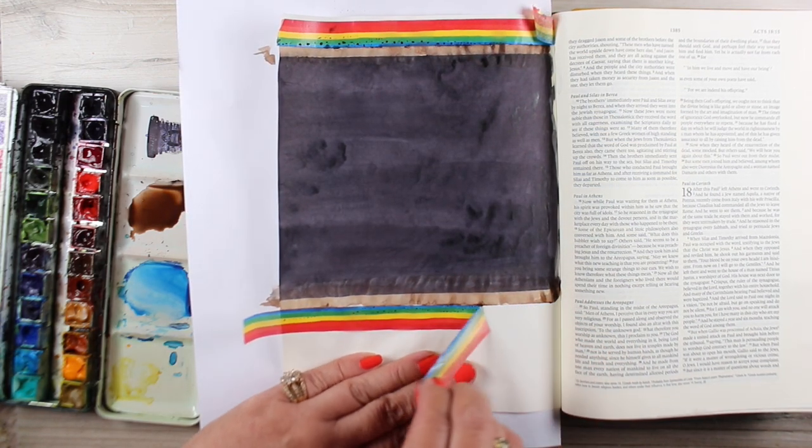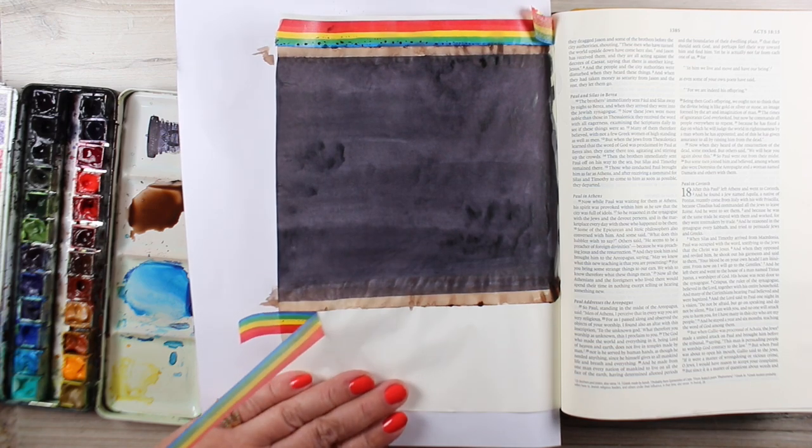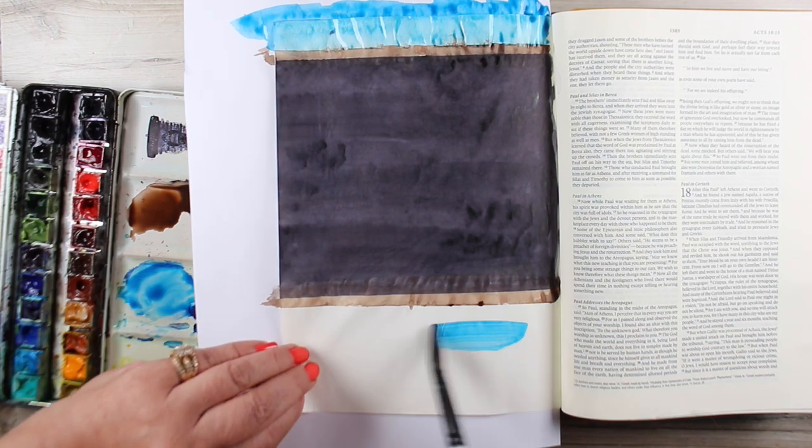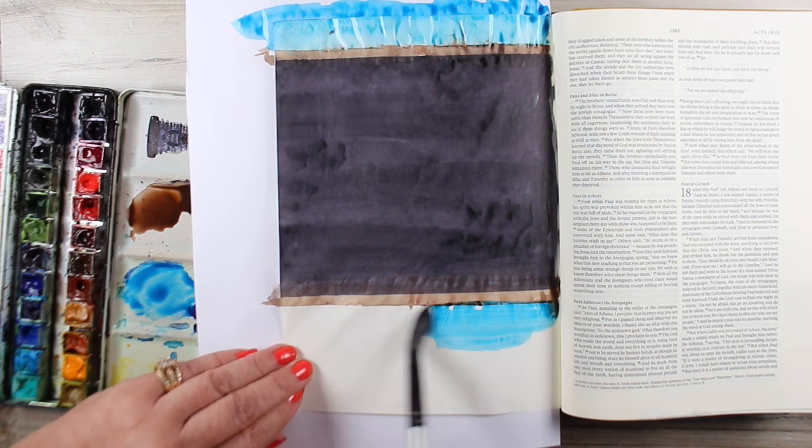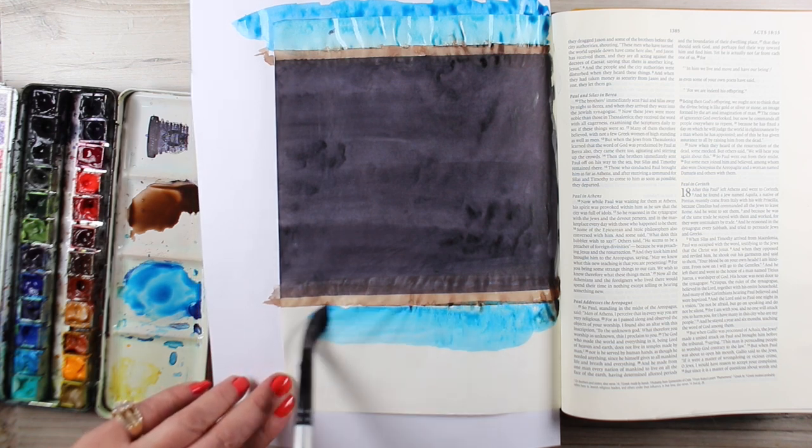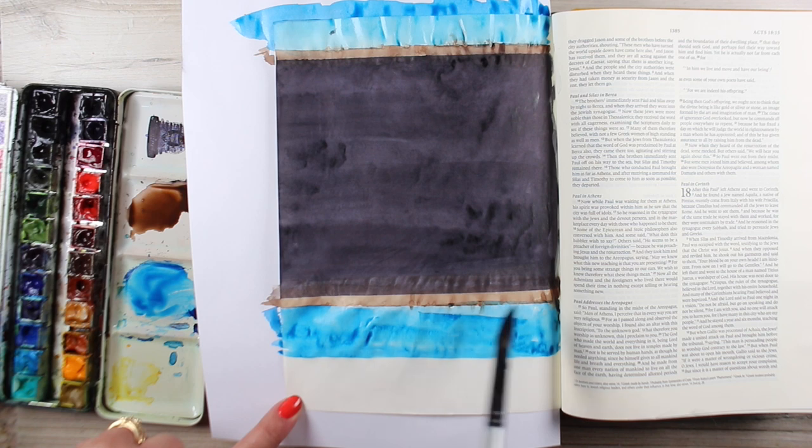This page is being done, by the way, in an interleave Bible. Interleave Bibles have a whole blank page in between every page of scripture. It means the Bible is extra thick, of course, because it's really big. It has more paper in it, but it gives you more room to work and you don't have to be kind of just painting down a column.